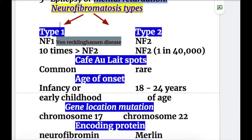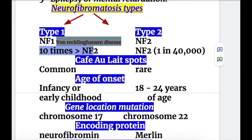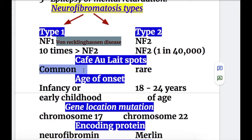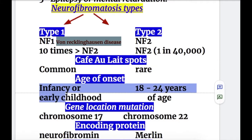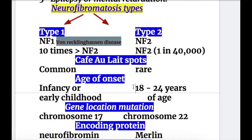There are two types of neurofibromatosis: type 1 (NF1) and type 2 (NF2). NF1, also known as von Recklinghausen's disease, is 10 times more common than NF2. NF2 occurs in 1 in 40,000 individuals. Café-au-lait spots are more common in type 1 and rare in type 2. NF1 occurs in infancy or early childhood, whereas NF2 occurs between the ages of 18 to 24.